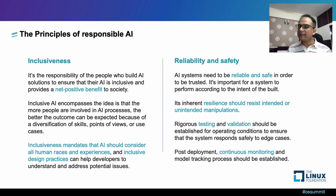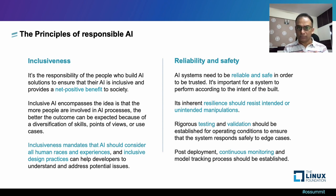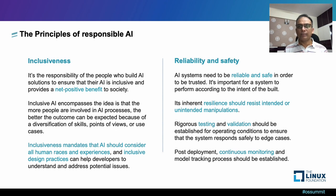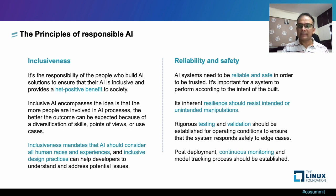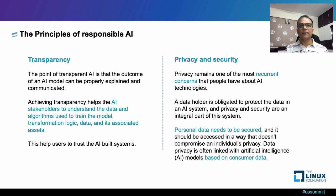Reliability and safety: AI systems need to be reliable, safe, and trustworthy. Their inherent operations should resist intended or unintended manipulations. Tests and validations should be established for the operating conditions to ensure that the systems are safely built and used according to the business cases. Continuous monitoring and model tracking are mandated to establish safe execution; otherwise it will create biasing as well as threats on the system.